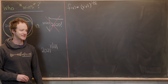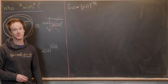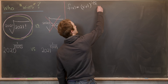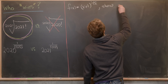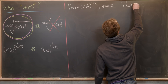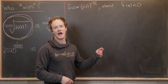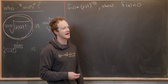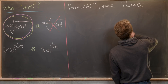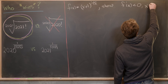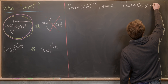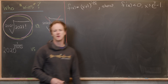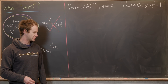We can show this function is decreasing using a standard calculus result: we show its derivative is negative, i.e., f prime of x is less than zero. This will hold for x values that are bigger than or equal to e squared minus one — a condition that will show up later in the argument.